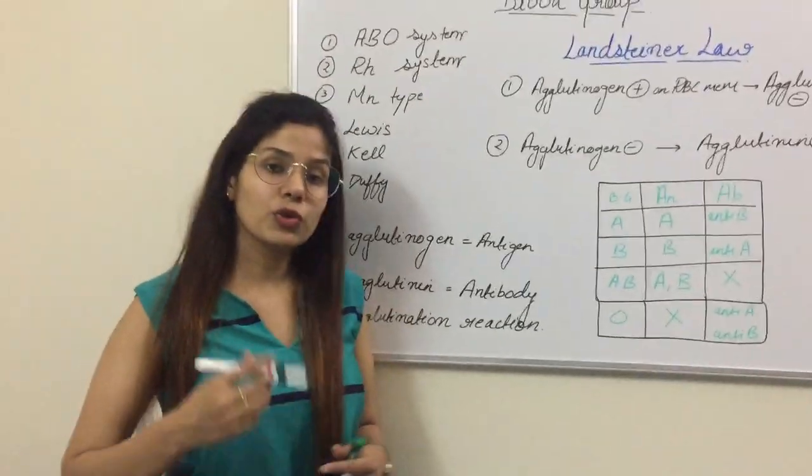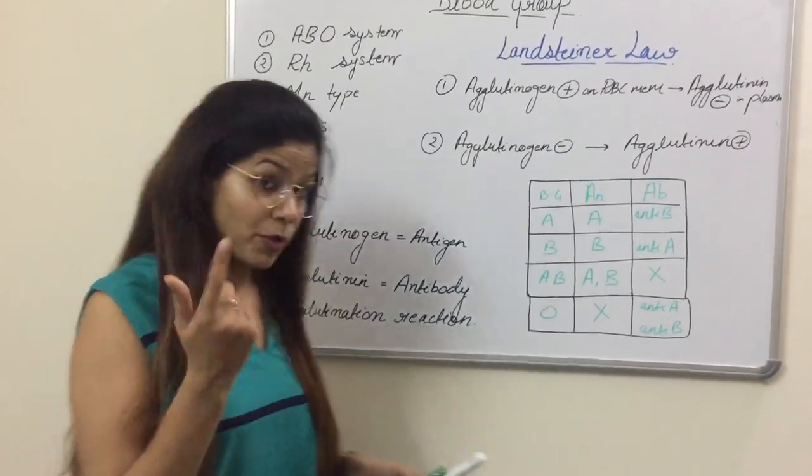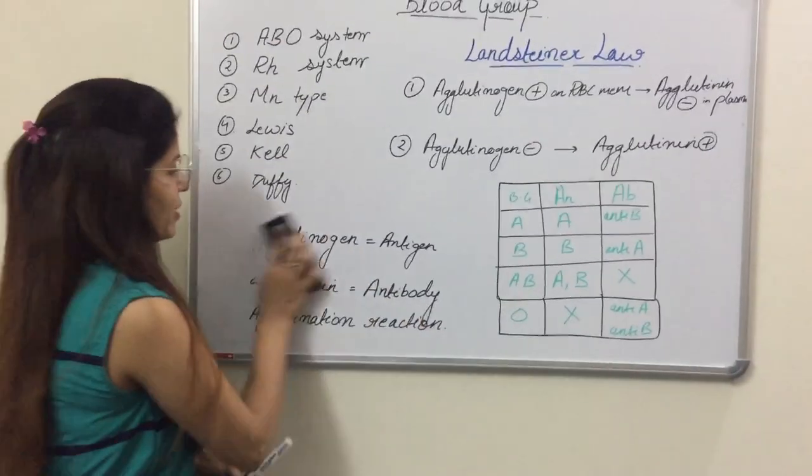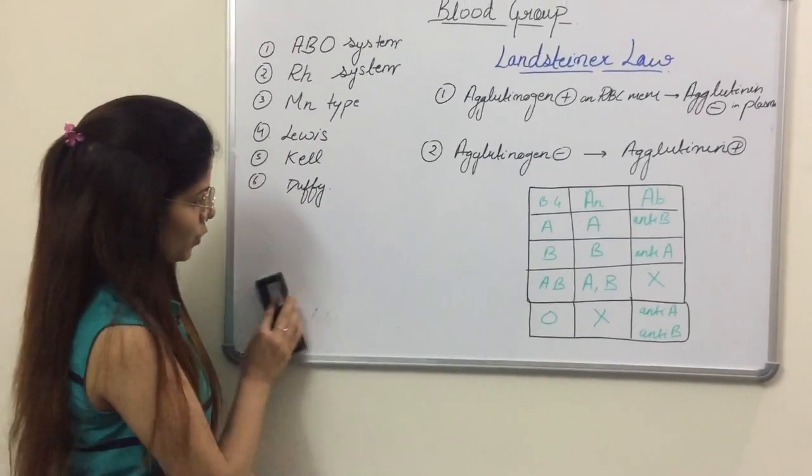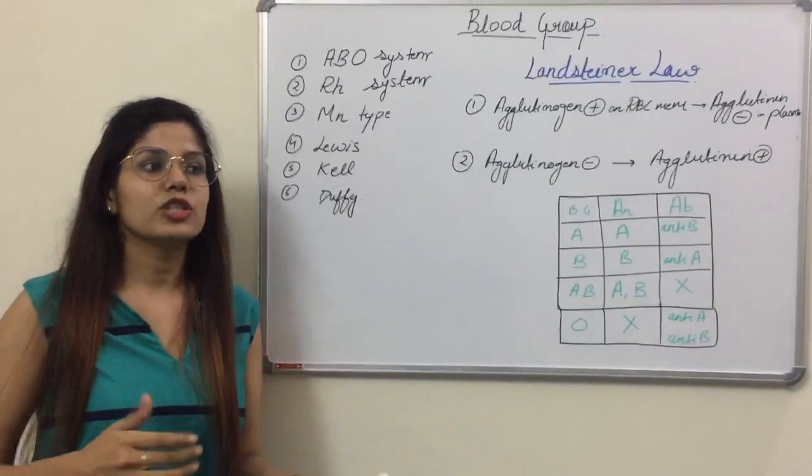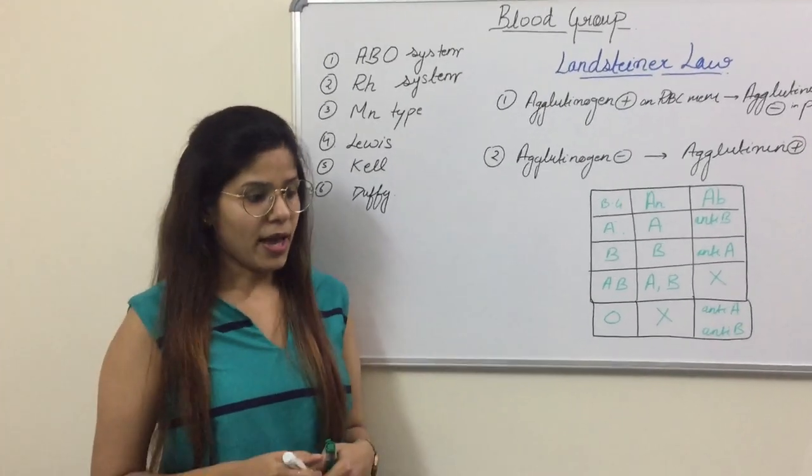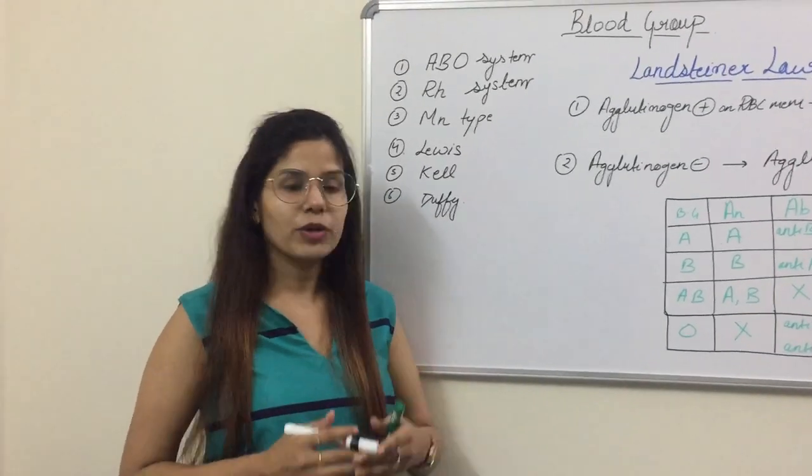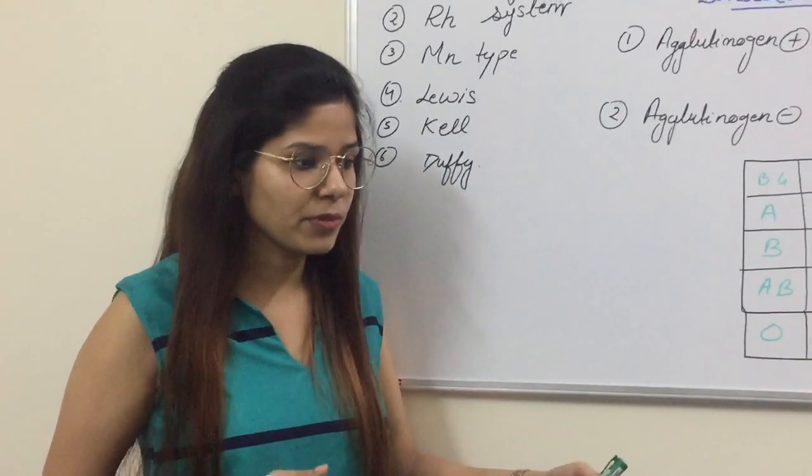Now, how can you perform this test? For performing this test, we need four glass slides and we need commercially prepared antibodies. And if you have these things, you can perform your blood group system even in your room.